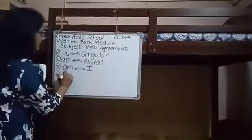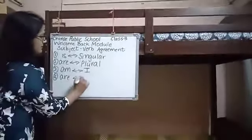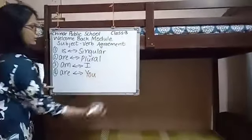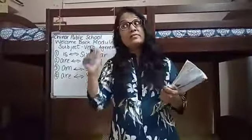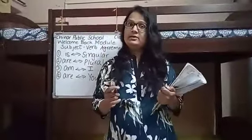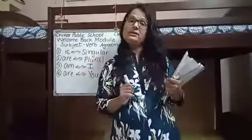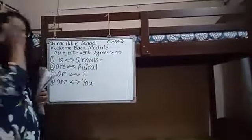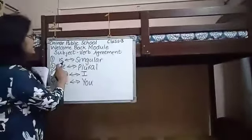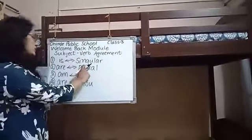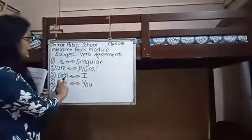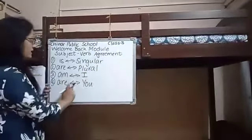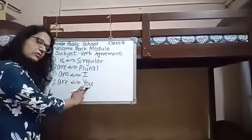Similarly, 'are' is the best friend of 'you'. For example, 'You are looking very pretty.' 'You are writing in a very beautiful handwriting.' These are the golden rules: 'is' with singular nouns or pronouns, 'are' with plural nouns or pronouns, 'am' with 'I', and 'are' with 'you'.